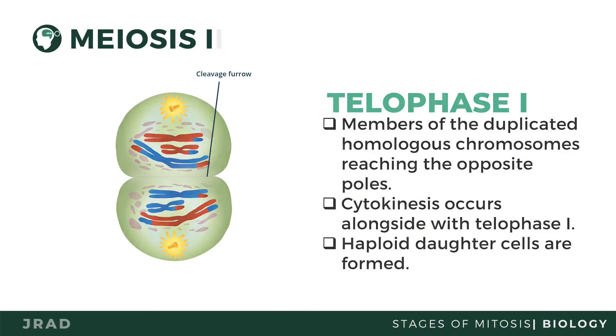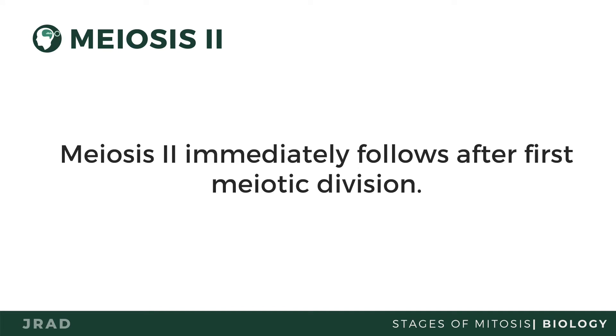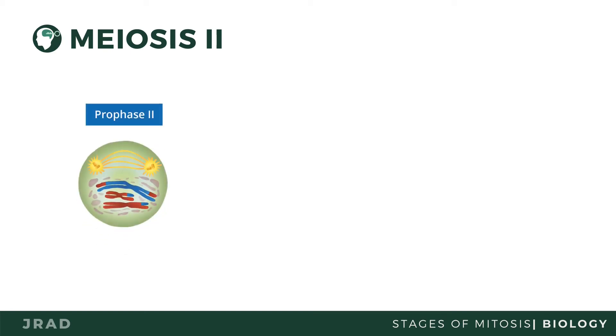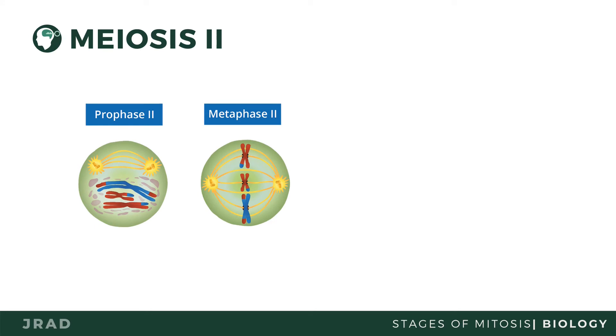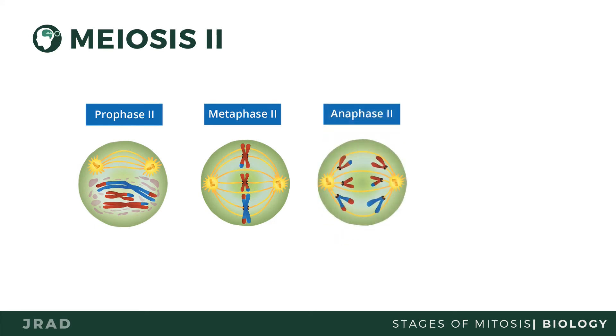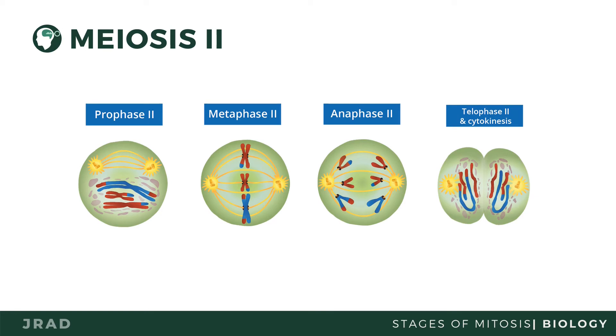The second division, meiosis 2, is equational — there is no further reduction in chromosome number. It is not preceded by DNA replication and begins in the two haploid daughter cells of meiosis 1. The process is similar to mitosis and involves the separation of sister chromatids. In prophase 2, spindle fibers form around the chromosomes. In metaphase 2, chromosomes line up at the equator. Centromeres divide in anaphase 2, and chromatids move to either side of the cell. Meiosis 2 ends with telophase 2 and cytokinesis, where the cytoplasm divides.